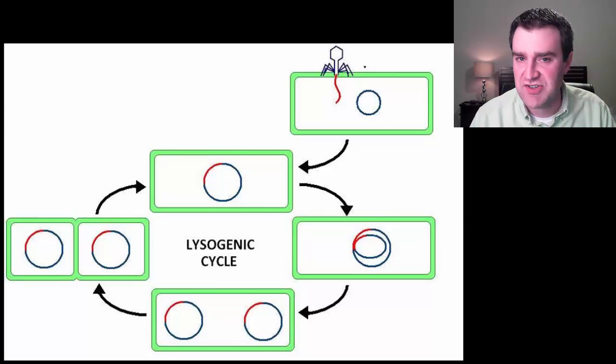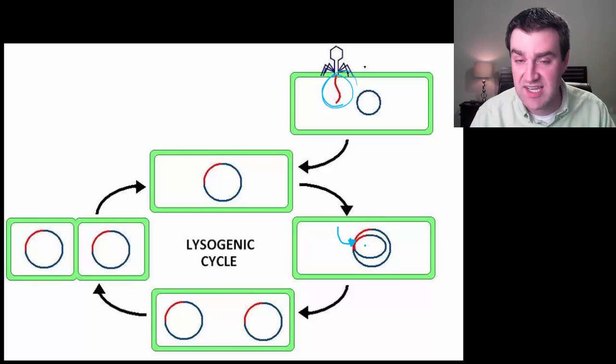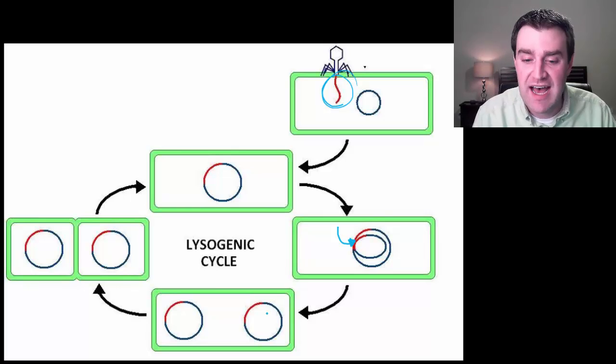In the lysogenic strategy, it's kind of a far sneakier strategy. So here is the viral nucleic acid inserting itself again. And maybe instead of directing the cell to immediately make new viruses, it instead kind of incorporates itself into the host DNA code. And it sort of hides there.